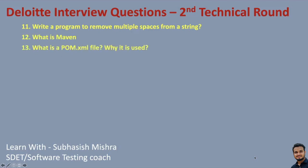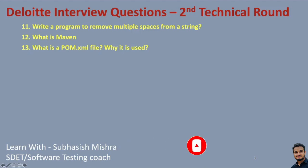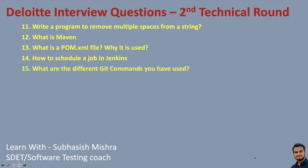What is Maven? What is the POM.xml file and why is it used? Nowadays these questions are very frequently asked — what is Maven, how are you using the POM.xml file, and why? How to schedule a job in Jenkins? Questions related to CI/CD — how to schedule a job and why you need to schedule it. What are the different Git commands you have used? You will definitely get some questions around Git.